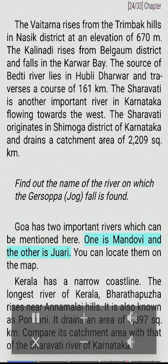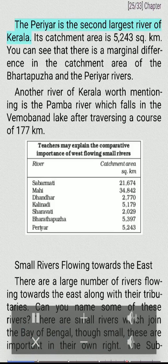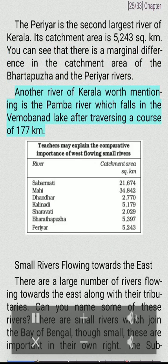The Bedti river's source lies in Hubli, Dharwad, and it traverses a course of 161 km. The Sharavati, another important river in Karnataka flowing westward, originates in Shimoga district and drains a catchment area of 2,209 sq km. Goa has two important rivers: the Mandovi and the Zuari. Kerala has a narrow coastline — the longest river of Kerala, the Bharathapuzha, rises near Anamalai hills and is also known as Paniani, draining 5,397 sq km. The Periyar is the second largest river of Kerala with a catchment area of 5,243 sq km. The Pamba river falls in the Vembanad Lake after traversing 177 km.